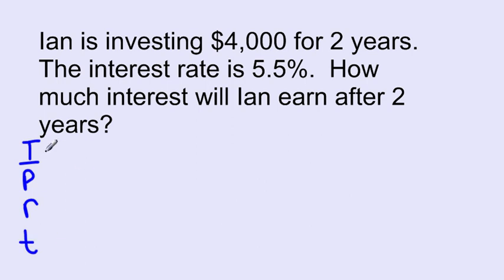I'm going to set up what we know and what we need to find out. The interest, that is exactly what they're asking. So we don't know the interest. That's what we have to find out. The principal is the amount that Ian's investing. So they give that to us, it's $4,000.